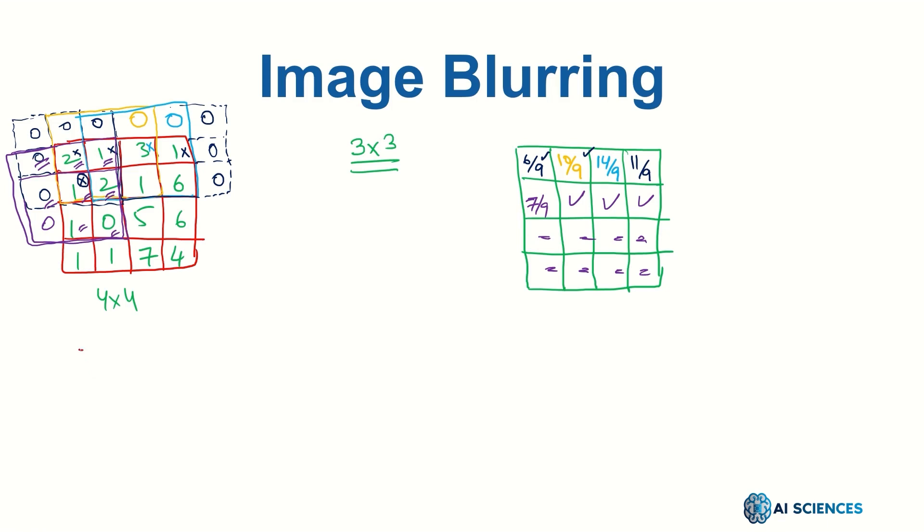Another way of seeing the same thing is the following. Let's say again we have the same input image. We have the same intensities as before: 2, 1, 3, 1, 1, 2, 1, 6, 1, 0, 5, 6, and 1, 1, 7, 4. And we have an output image which is again 4x4.